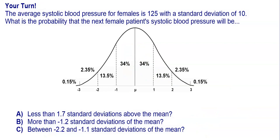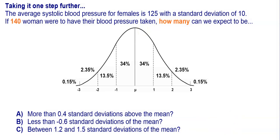Why don't you go ahead and try this one with blood pressure? Let's take it one step further — sometimes they don't want the percentage or the probability, but they actually want a number. For example, if the average systolic blood pressure for females is 125 with a standard deviation of 10, and 140 women were to have their blood pressure taken, how many can we expect with the following? We're going to find the probability and then multiply it by the number of women.